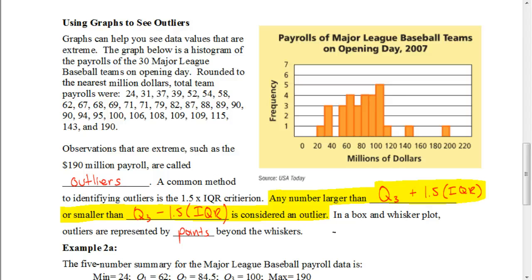Sometimes we have observations — numbers that look like they're extreme on one end of the majority of the data or the other. We call those extreme values outliers. For example, certain values here could possibly be outliers — we're going to figure that out now.